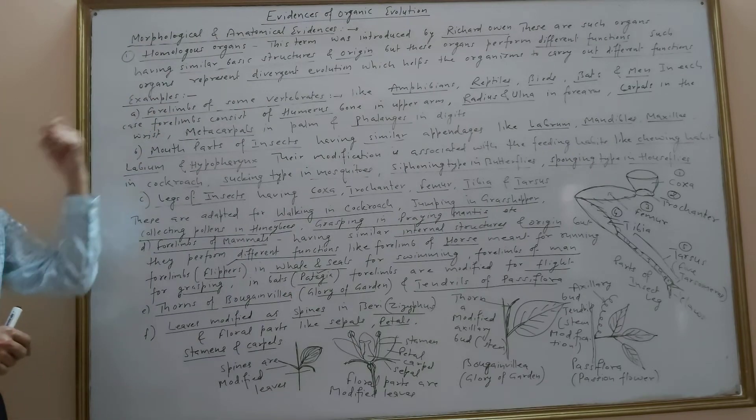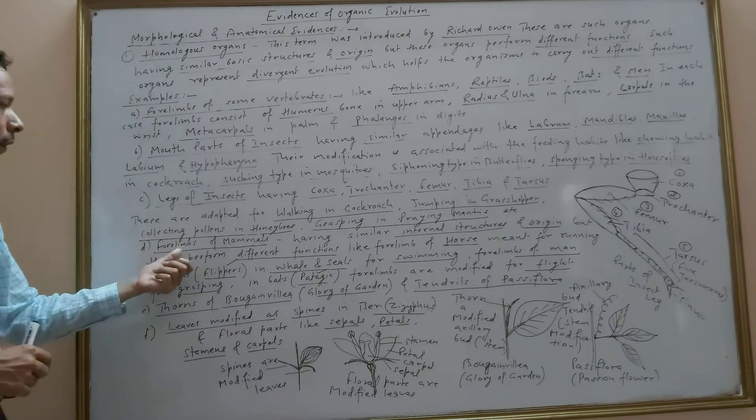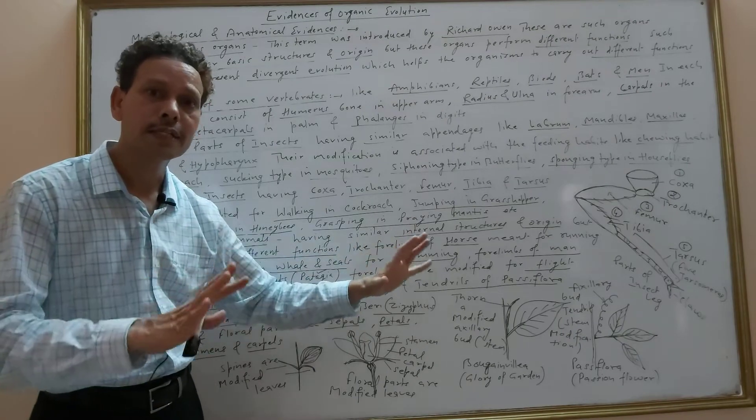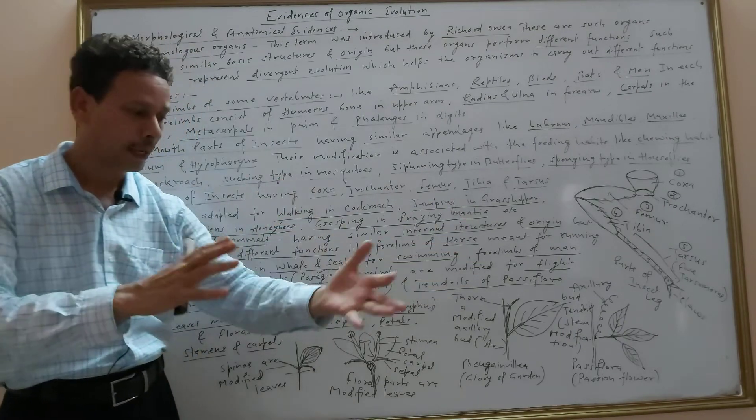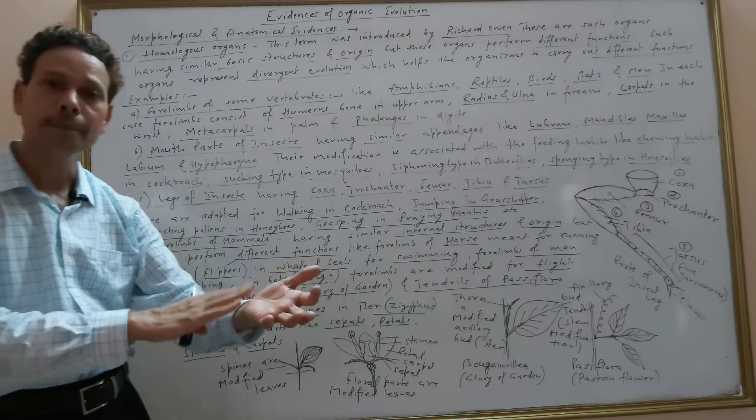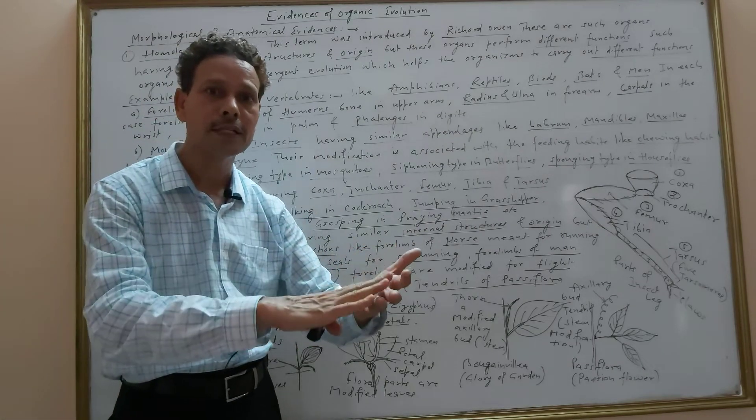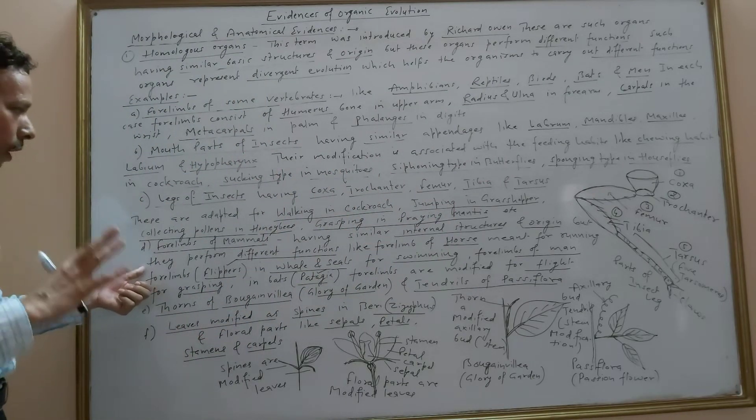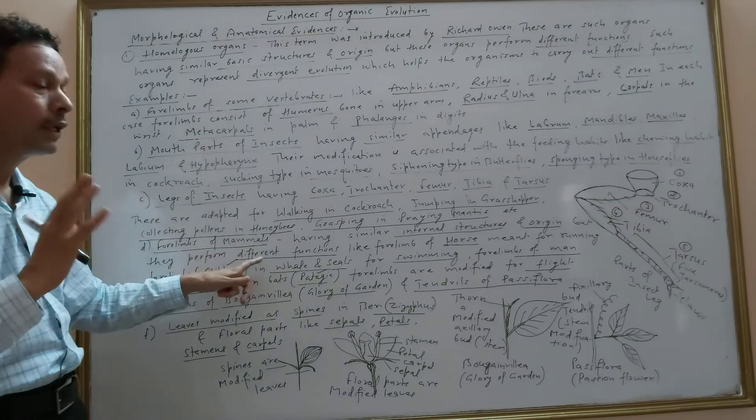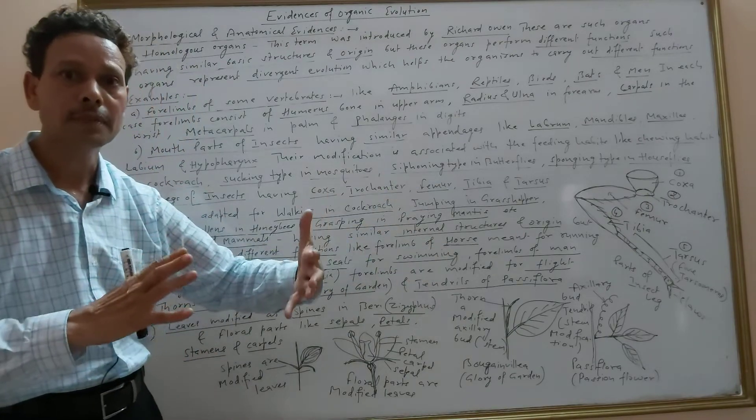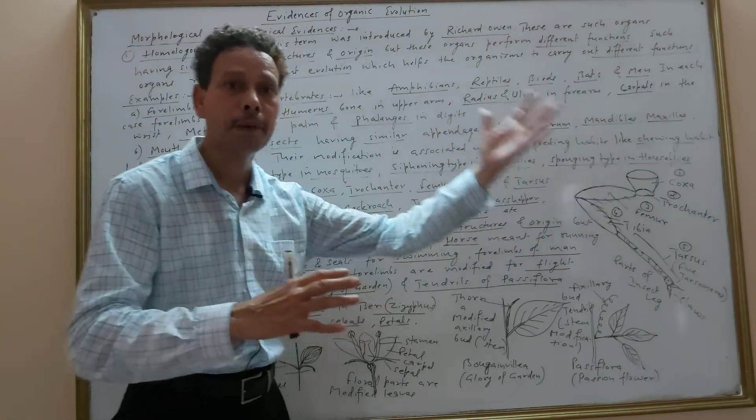Next example of homologous organs: forelimbs of mammals having similar internal structure, same anatomy, same pattern like humerus bone, radius-ulna, carpals, metacarpals, phalanges, all similar. These forelimbs in mammals perform different functions. In case of horse, the forelimbs are meant for running purpose.